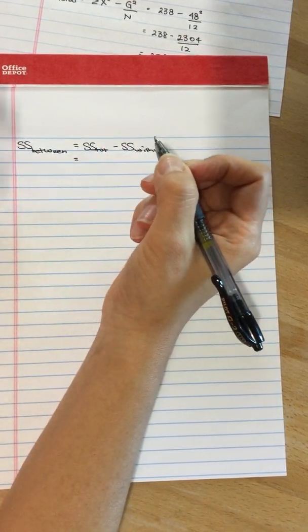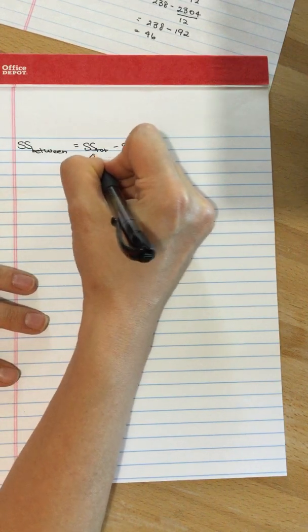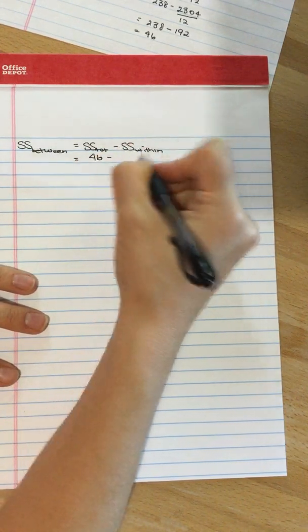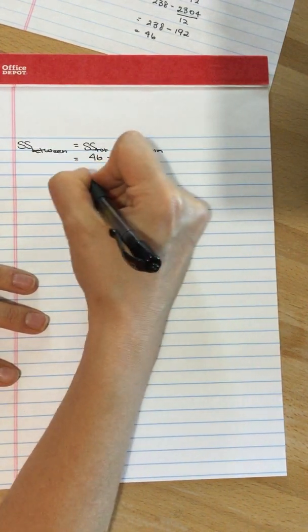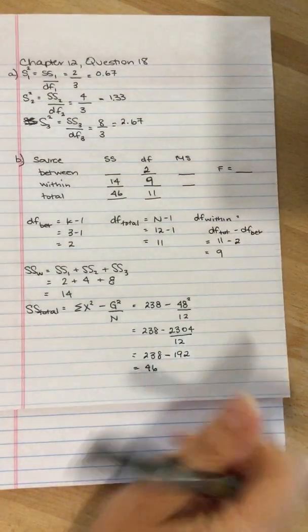Sum of squares total, we just calculated, was 46, and sum of squares within we calculated and it was 14. So there is our answer, 32, and I'll go ahead and fill that in.